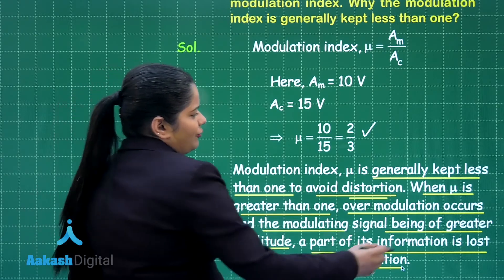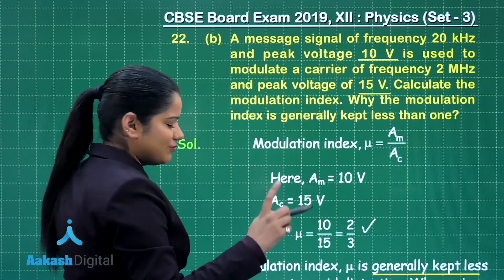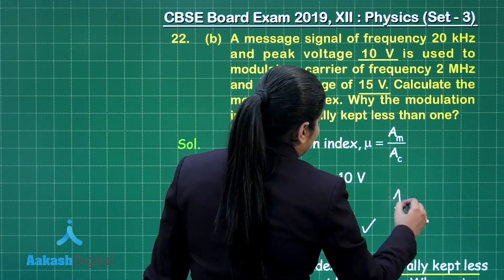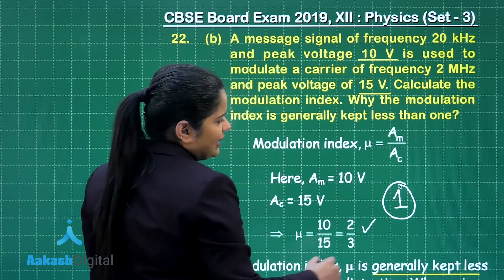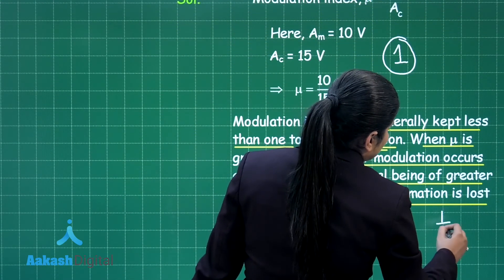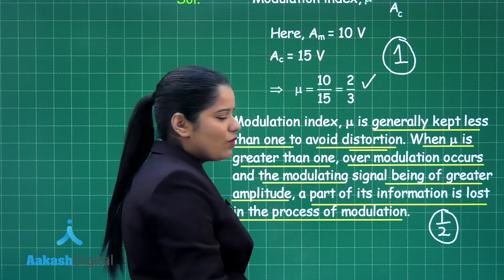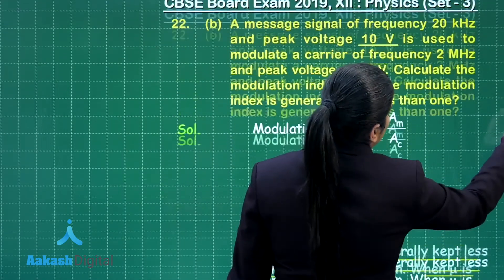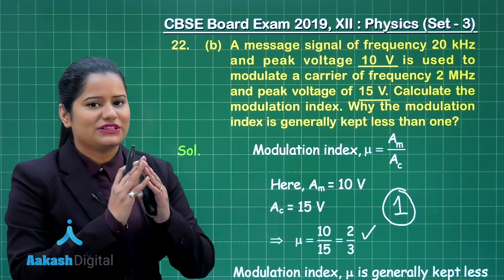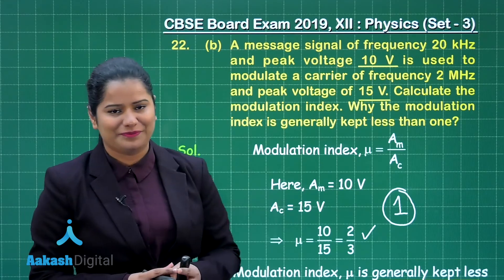For the marking scheme of Part B: you will get one mark for calculating the modulation index and half a mark for the explanation. This is how you are going to score three out of three for this question. I hope the solution is quite clear to you. Let us move on to the discussion for the next question.